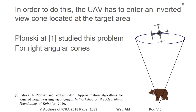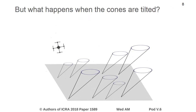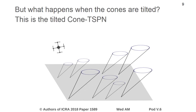In our previous work we studied this problem for a large number of right angular cones. The solution yielded a polynomial time approximation algorithm for the Cohen-TSPN problem. However, we did not consider what happens when the cones are allowed to tilt. This is the tilted Cohen-TSPN problem and is the problem we study in this work.